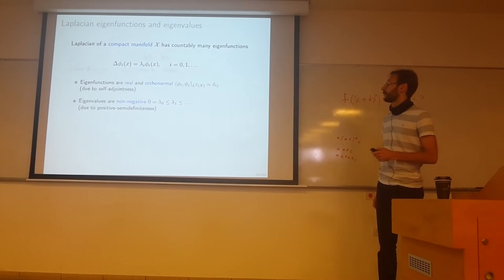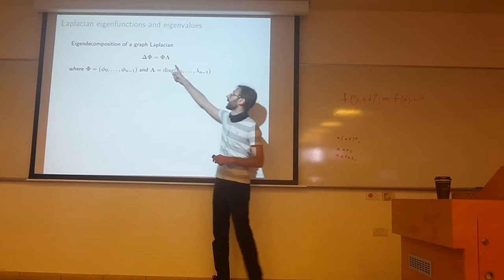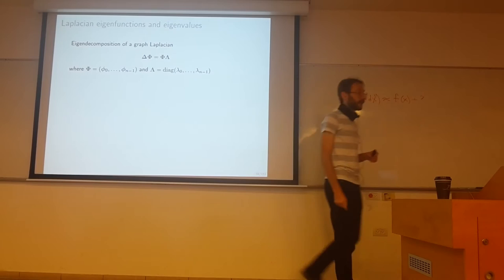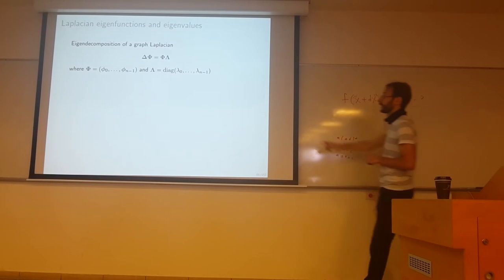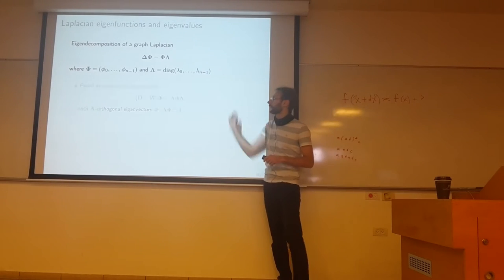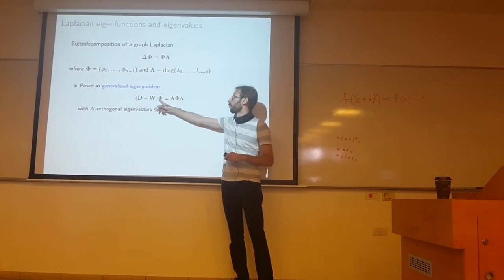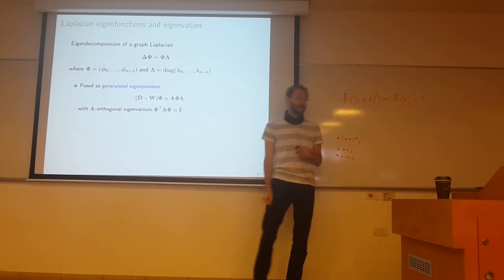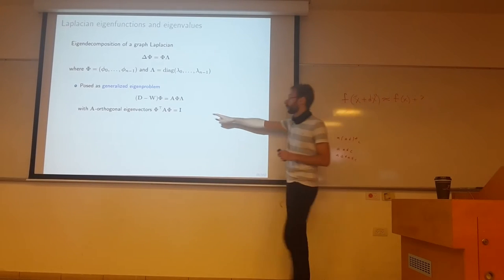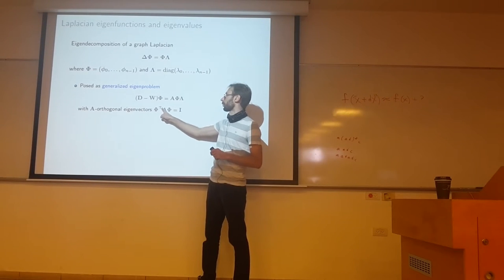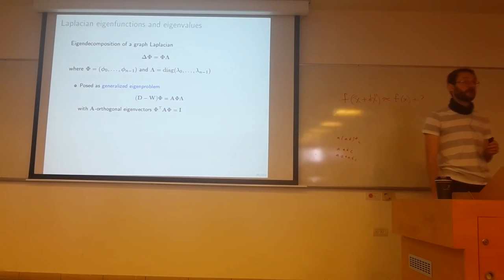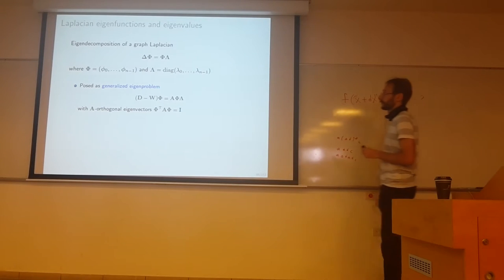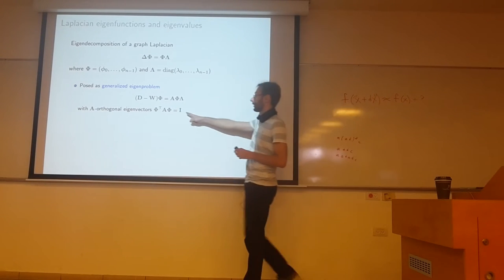For the graph, it will be exactly the same. You can write it as an eigendecomposition problem of this form, where phi here is a matrix n by n containing the eigenvectors as columns, lambda is a diagonal matrix containing the corresponding eigenvalues. We usually pose it as a generalized eigenvalue problem, which produces orthogonal eigenvectors that are orthogonal with respect to matrix A. We assume that it's strictly positive diagonal, so it's positive definite.